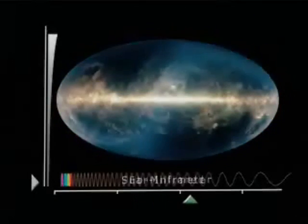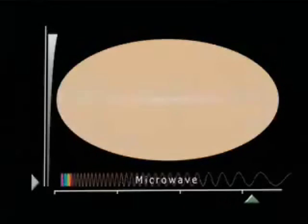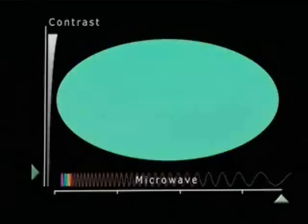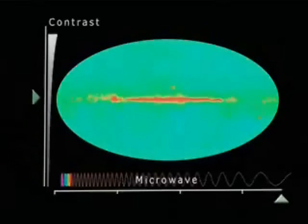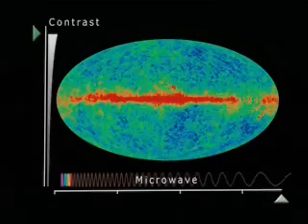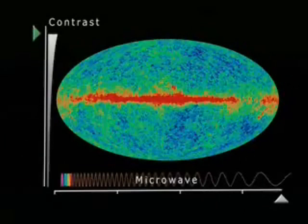The red band across the center of the sky image is strong radiation from our Milky Way galaxy. The cooler blues and greens at the higher latitudes are a much larger portion of the background radiation.